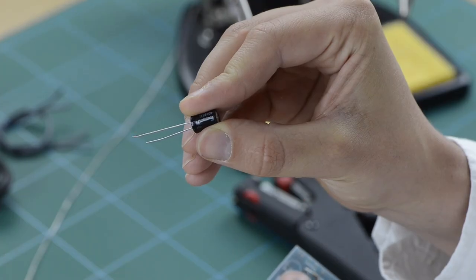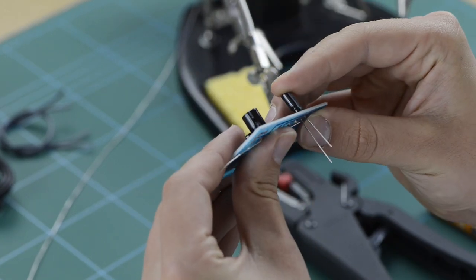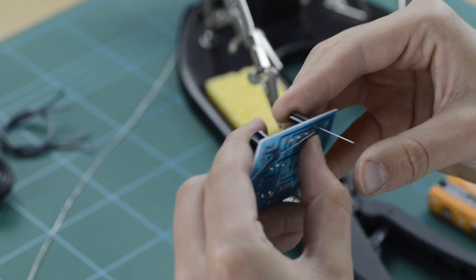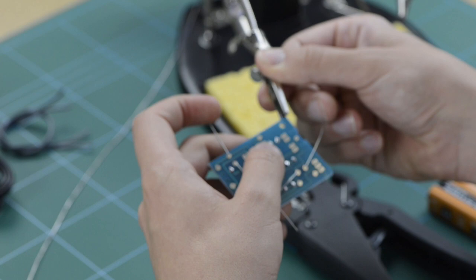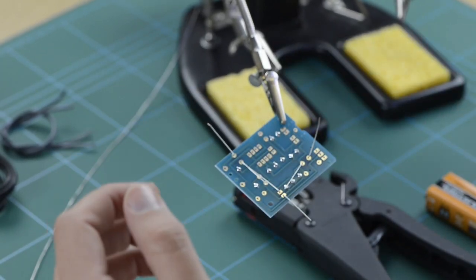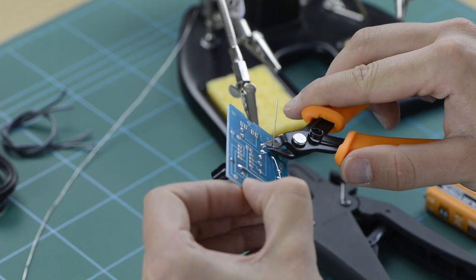Next, place your electrolytic capacitors onto your PCB board, ensuring the long leg or anode is placed in the hole with the positive sign next to it. Again, bend the legs back to ensure that these components don't fall out when soldering and clip the PCB back to your helping hands. Solder these legs into place and snip off any excess material.